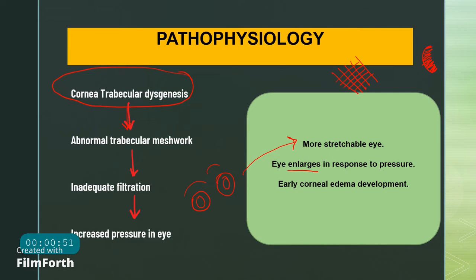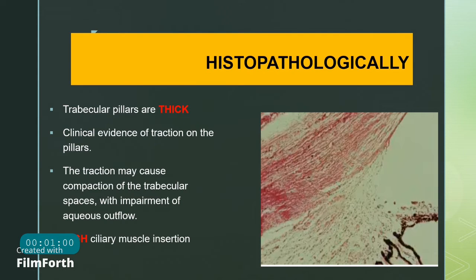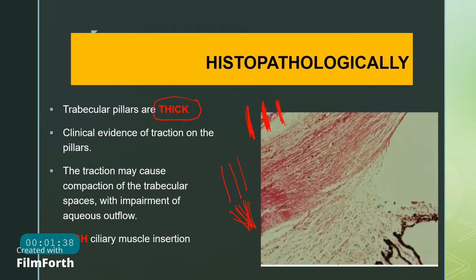Children also develop corneal edema quite early. Histopathologically, the trabecular pillars are thicker than normal due to deposition of abnormal collagen. There is also traction — an abnormal pull on these trabecular pillars — causing compaction and a decrease of spaces within the trabecular meshwork. This impairs aqueous outflow. Additionally, high ciliary muscle insertion is seen in these cases.